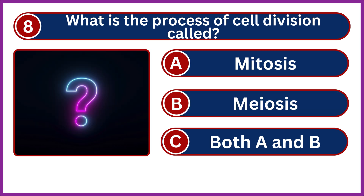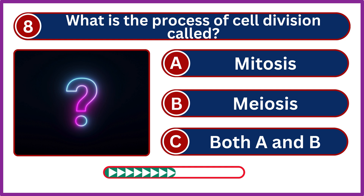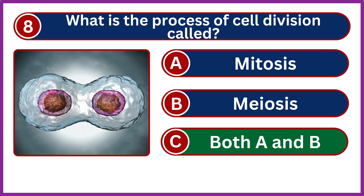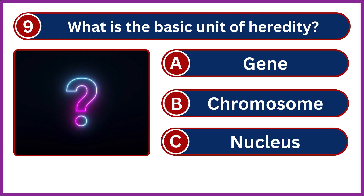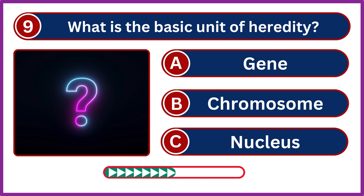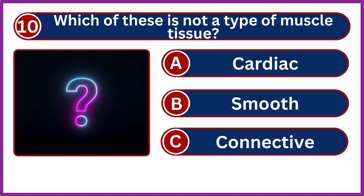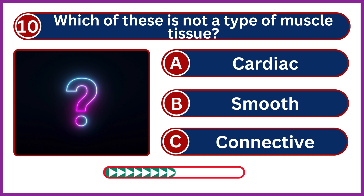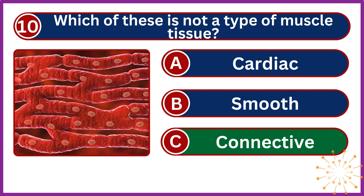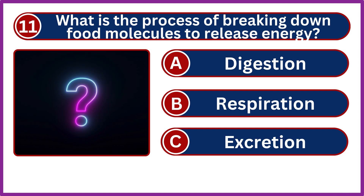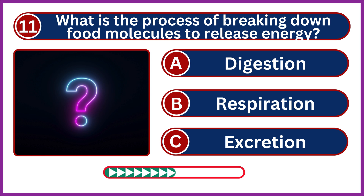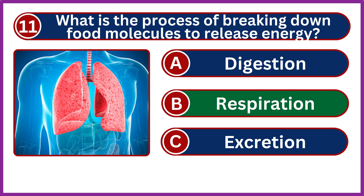What is the process of cell division called? Both A and B. What is the basic unit of heredity? Gene. Which of these is not a type of muscle tissue? Connective. What is the process of breaking down food molecules to release energy? Respiration.